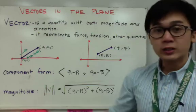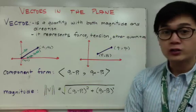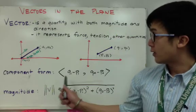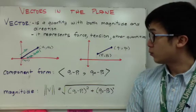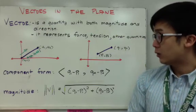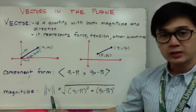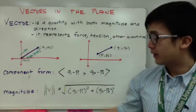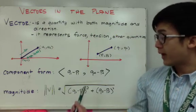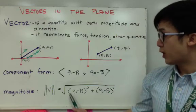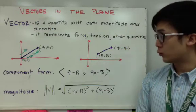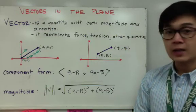Now there are two things you need to understand about vectors: how to find the component form of a vector given points, and its magnitude. The component form is given by the formula (q sub 1 minus p sub 1, q sub 2 minus p sub 2), and its magnitude is given by the square root of (q sub 1 minus p sub 1) squared plus (q sub 2 minus p sub 2) squared. We'll use those two formulas in our problems.